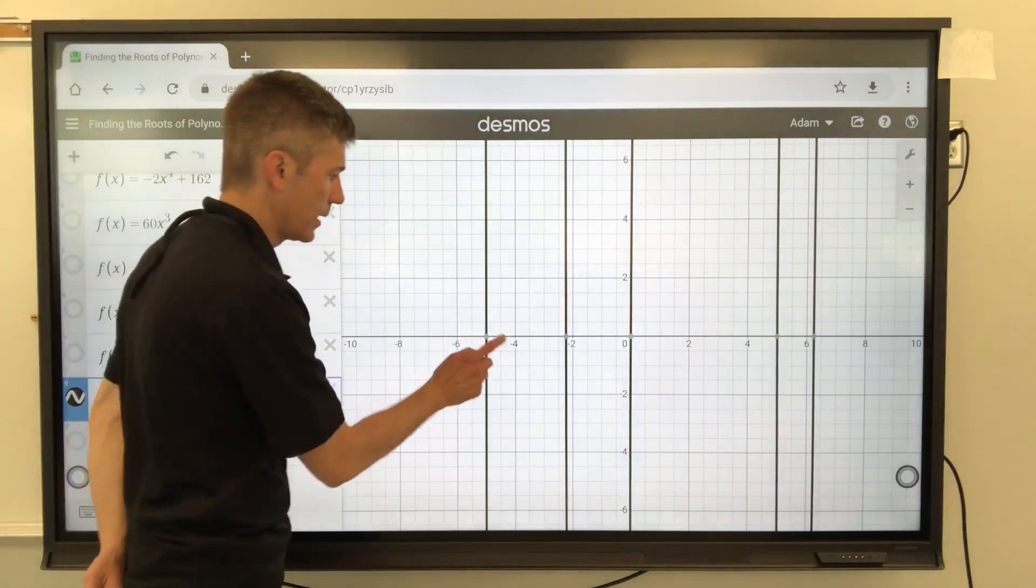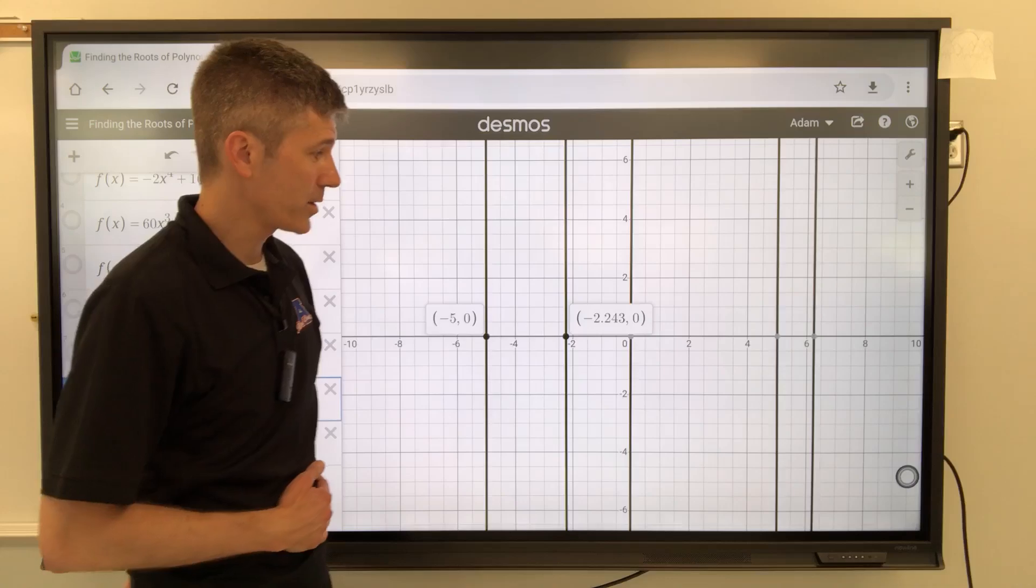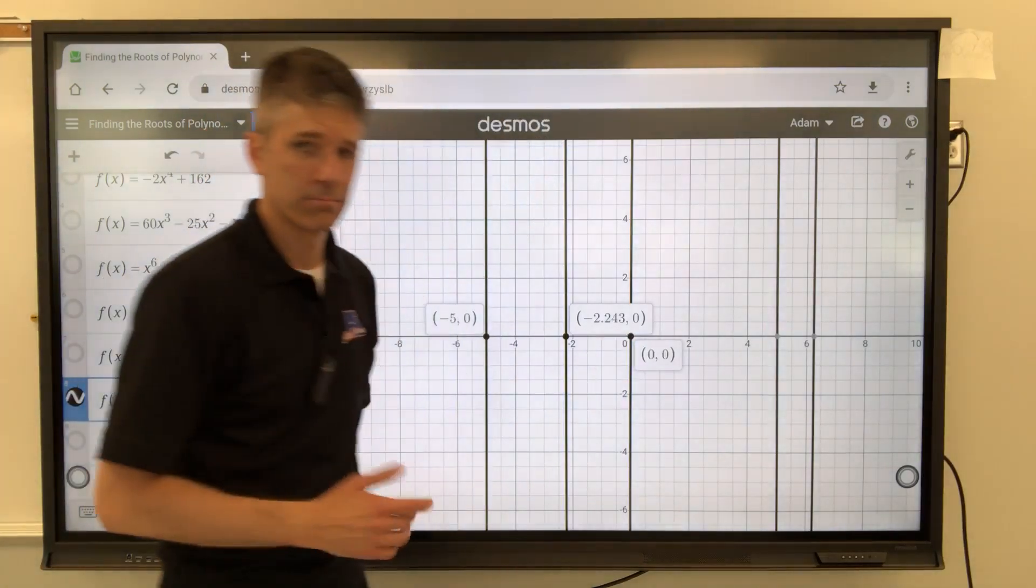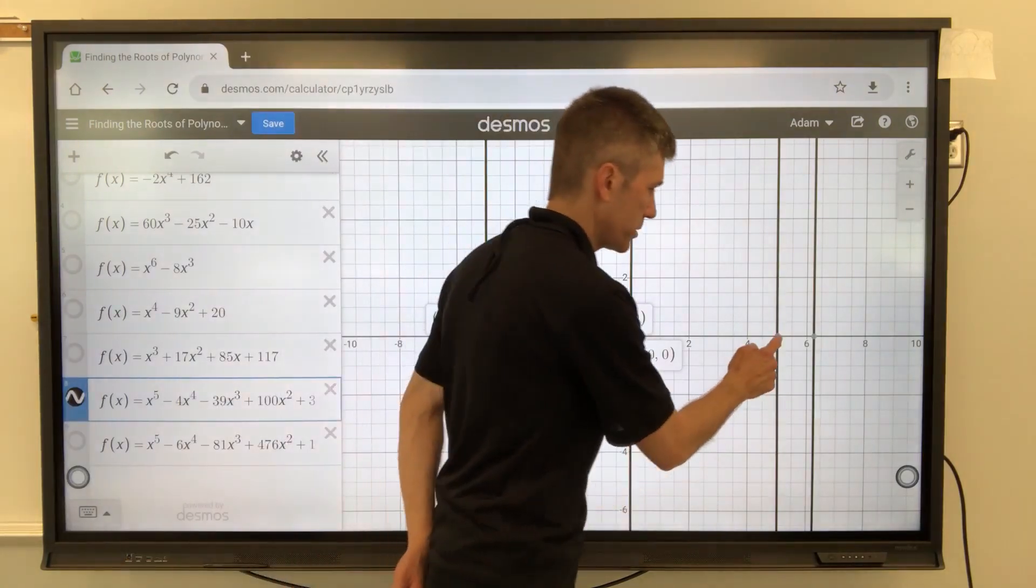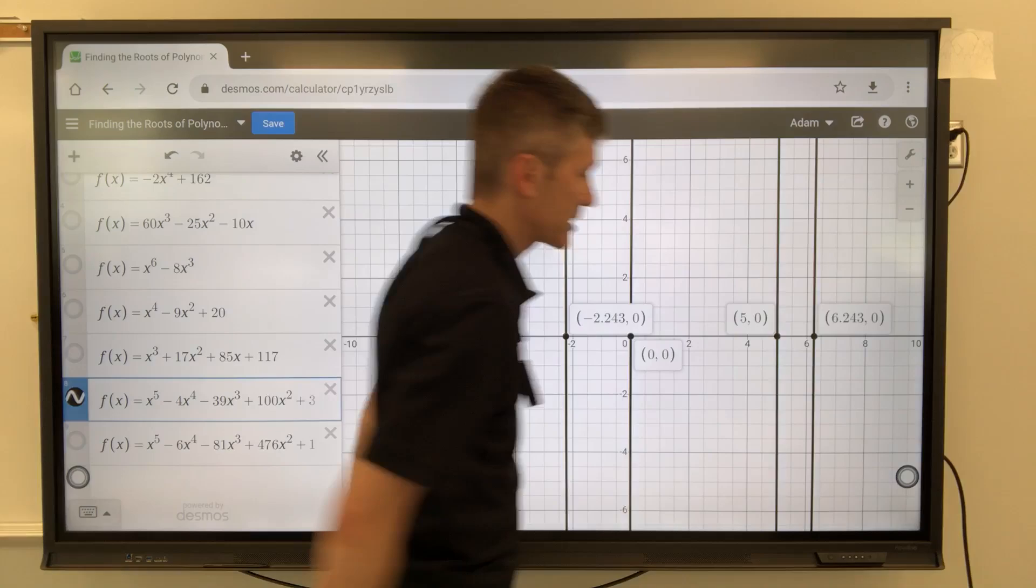All right, we have negative 5, negative 2.243, zero. No surprises there. Told you. Positive 5, and 6.243.